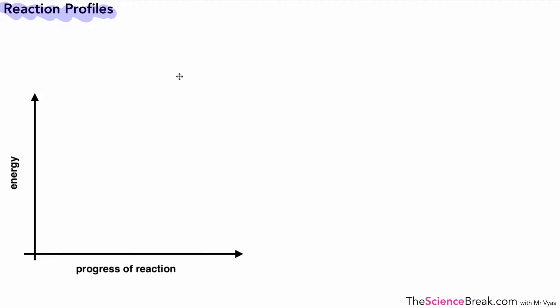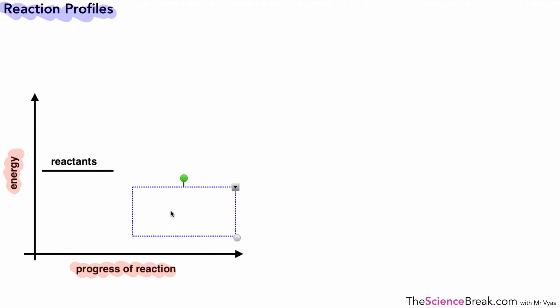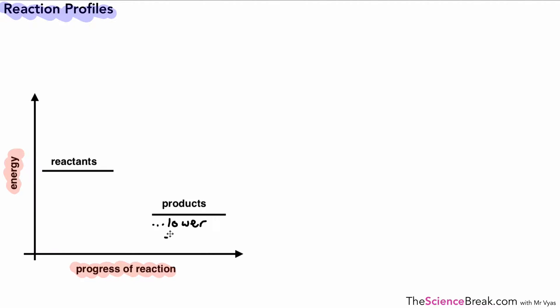Now here is our reaction profile for a chemical reaction. Along the bottom we have the progress of the reaction and on the side we have the energy of the reactants or products. So here in this example we've got our reactants — often it's two reactants that are reacting — and on the other side here we've got our products. As you can see the energy of the products is lower than the energy of the reactants.